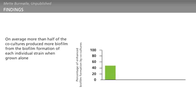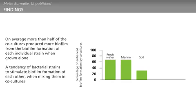We found that, on average, more than half of these co-cultures produce more biofilm than expected from the biofilm formation of each individual strain when grown alone. This means that there seems to be a tendency of bacterial strains to stimulate biofilm formation of each other when mixing them in co-cultures.